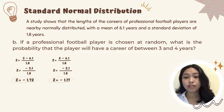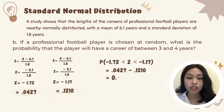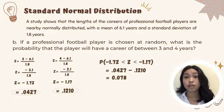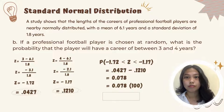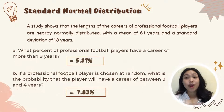Ngayon, since nakuha na natin yung value ng 3 and 4, what we are going to do is to subtract them. 0.1210 minus 0.0427, which is then equal to 0.0783. And again, since probability yung hinahanap, kailangan natin i-multiply yung answer sa 100. And with that, our final answer will be 7.83%.